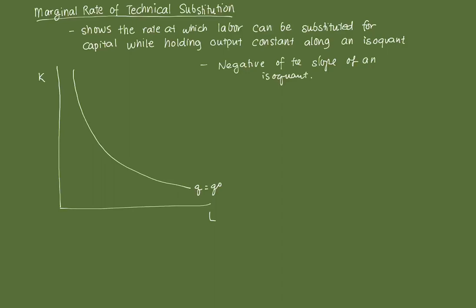We denote that as our marginal rate of technical substitution — MRTS_LK — and that's equal to the negative of the slope of the isoquant. So the slope is dK over dL along a constant isoquant Q-naught.